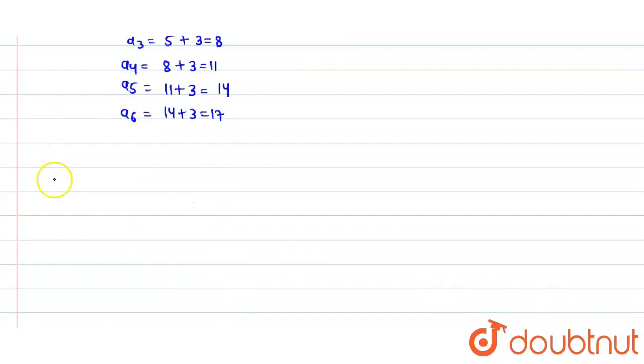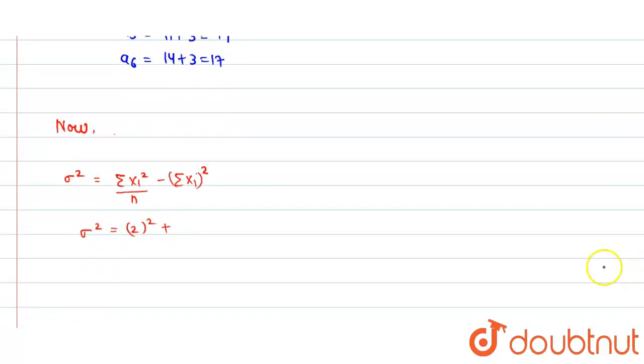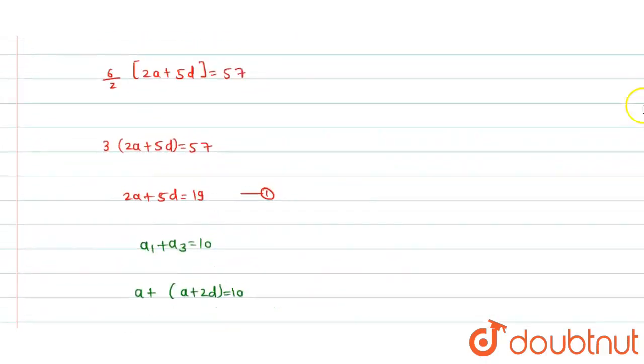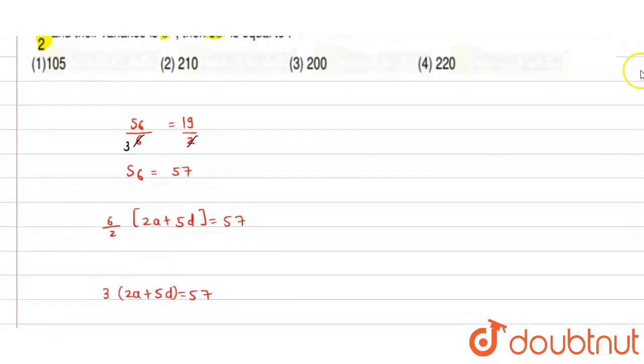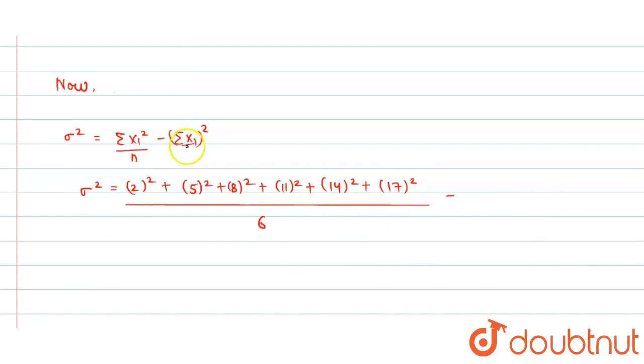Now we need to find variance. Sigma square formula is sigma x i squared divided by n minus sigma x i divided by n whole square. So sigma square equals sum of squares of all terms divided by 6 minus the mean squared. The sum sigma x i was already given as 19 by 2.